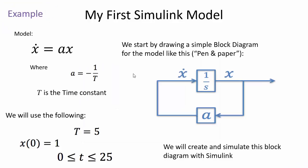In the next example we want to simulate a simple dynamic system. The differential equation for the system gives us the block diagram: we have output x, feedback gain a, and we use the integrator block to integrate the derivative. Here we have x-dot on the left side of the integrator, and x after the integrator block.